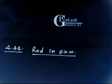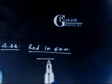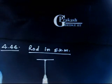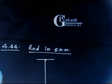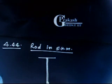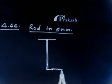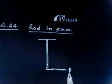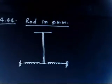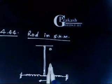Let us discuss point number 4.44. Let me first make the diagram. So we have a rod here — this rod is connected through two springs. On one side you have a spring, and on the other side also you have a spring. This rod can rotate, and they are calling this point O.